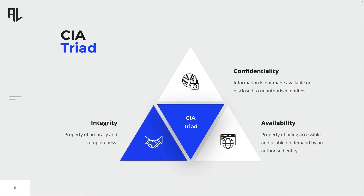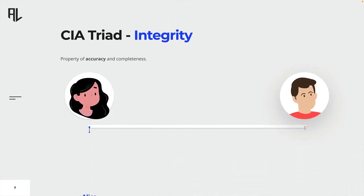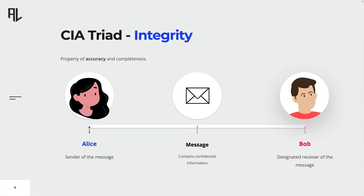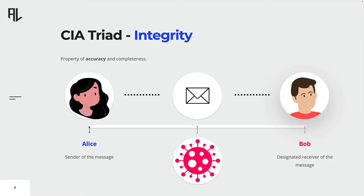The second security objective is integrity. Integrity is the property of accuracy and completeness. Again, let's assume Alice wants to send another message to Bob. Just like before, an attacker is able to gain access to the message. We already know that this is a violation of confidentiality. But this time the attacker does not only read the message — the attacker also changes the content of the message and therefore violates its integrity.